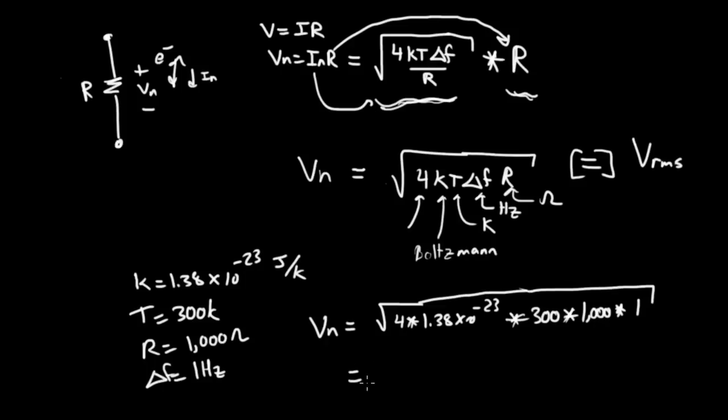And if we work that out it comes out to be 4.07 nanovolts RMS. What would the noise current be? That would just be Vn divided by R which is 4.07 nanovolts divided by 1000 which is 4.07 picoamps.